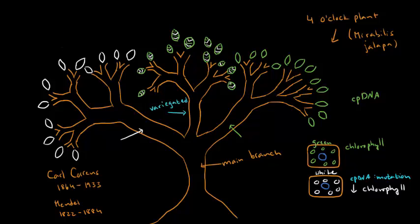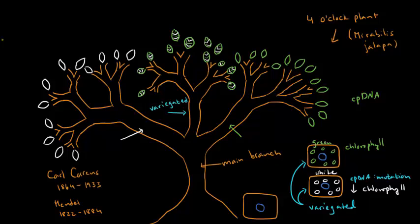The variegated leaves have some cells that have regular chloroplasts that make chlorophyll, and then they have some cells with mutated chloroplasts that do not make chlorophyll, or rather make a very small amount. They actually have a third type of cell that has both types of chloroplasts — chloroplasts that do make chlorophyll, and chloroplasts with mutated DNA that do not make much chlorophyll.